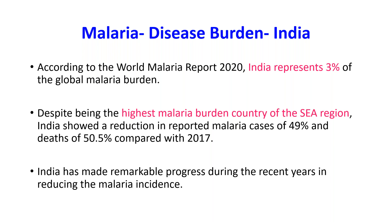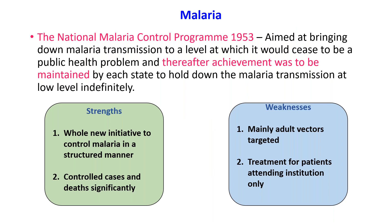India has made remarkable progress in reducing malaria incidence in recent years. The first program in India was the National Malaria Control Program, launched in 1953. It aimed at bringing down malaria transmission to a level at which it would cease to be a public health problem, with each state maintaining malaria transmission at a lower level.